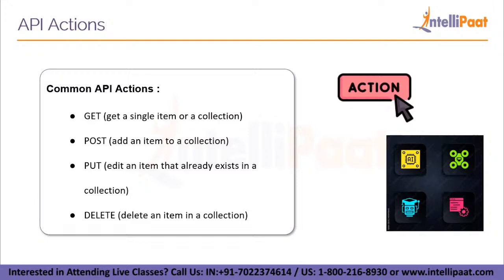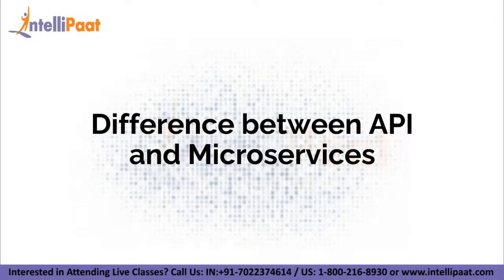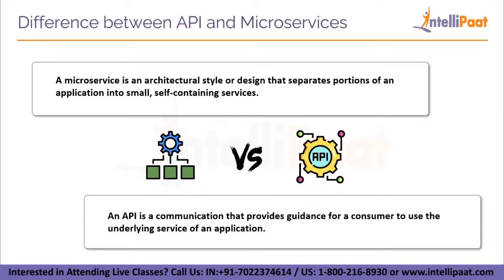The GET, POST, PUT, and DELETE commands, when used with the URL, fetch or give data to the APIs as expected. The API endpoint is frequently supplied in conjunction with a developer portal that instructs developers on how to use it and provides them with an API key. A microservice is an architectural style that separates portions of an application into small, self-containing services, whereas an API is usually a portion of a microservice allowing it to interact with the microservice itself. The API serves as a contract for interactions within the microservice, presenting the options available for interacting with the microservice.